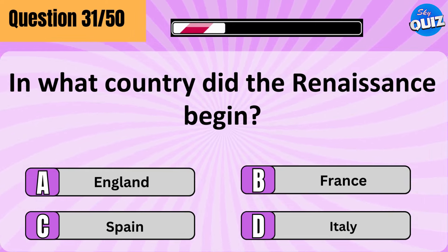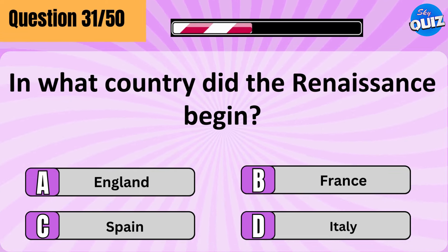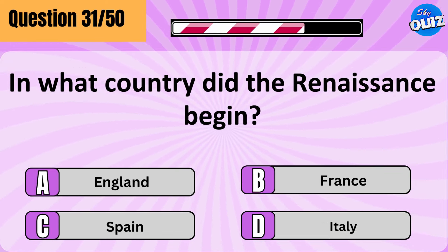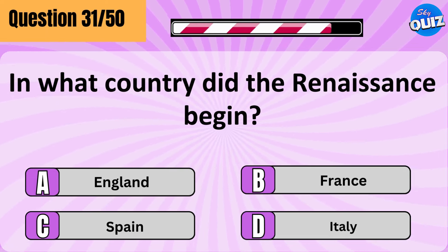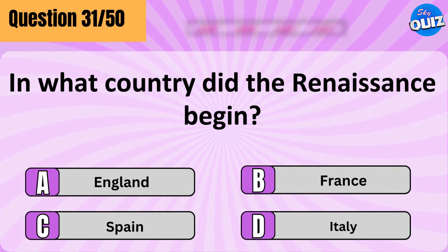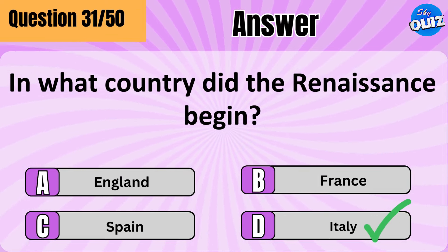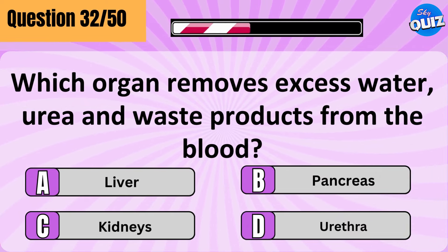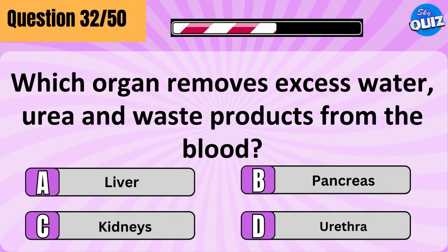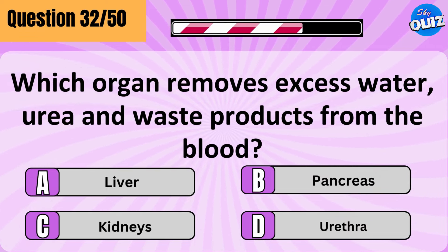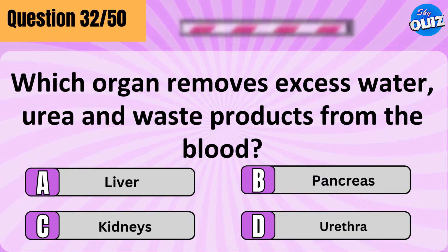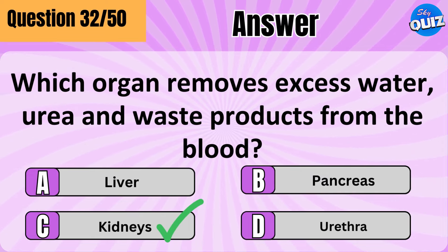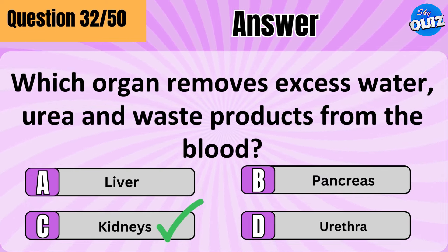In what country did the Renaissance begin? Italy. Which organ removes excess water, urea, and waste products from the blood? The kidneys.